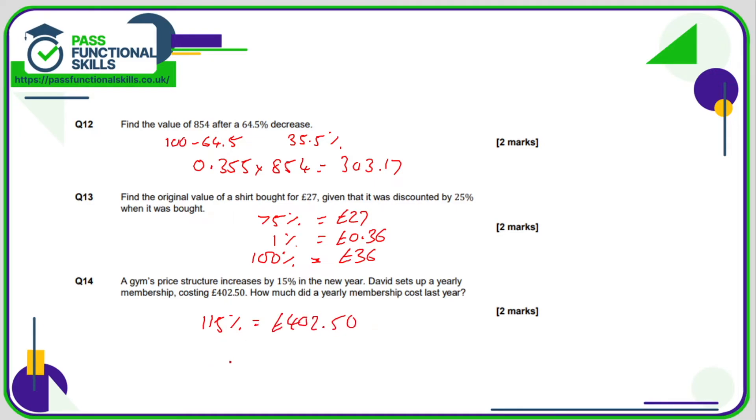So, similar to question 13, I'm going to work out what 1% is, and then work out what 100% is. So if 115% is this figure here, then 1% is this figure here, divided by 115, which is 3.5, so £3.50. So therefore 100% is going to be 100 times this amount, which is £350.